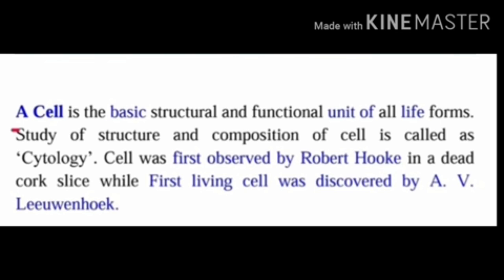Onion peel cells — phyaj ke chilka — a thin layer is peeled off and studied under a microscope. In this chapter we will go through structures, their compositions, and their functions.